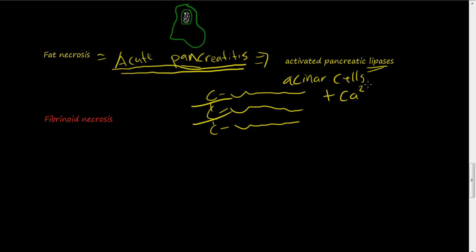Well these activated pancreatic lipases cleave these triglycerides into individual acids. And then these fatty acid tails combine with calcium to form kind of little lumps. And so fat necrosis, if you have a tissue here, there's chalky white little balls if you will.